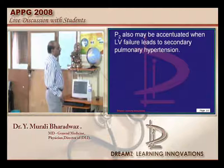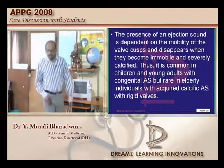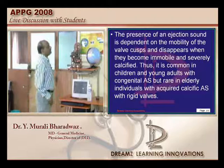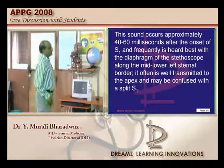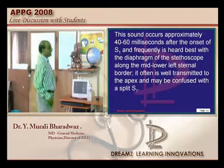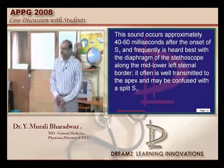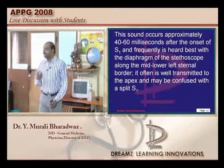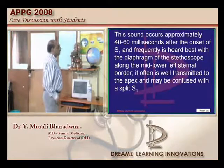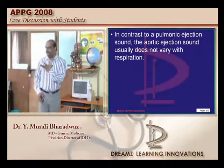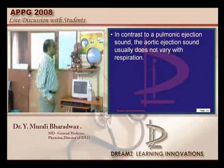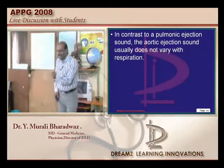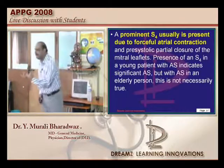In aortic stenosis there is an ejection sound, occurring around 40-60 milliseconds after the onset of S1. If the valve is thickly calcified, even the ejection sound may be lost. The pulmonic ejection sound varies with respiration, unlike the aortic ejection sound which does not vary with respiration.